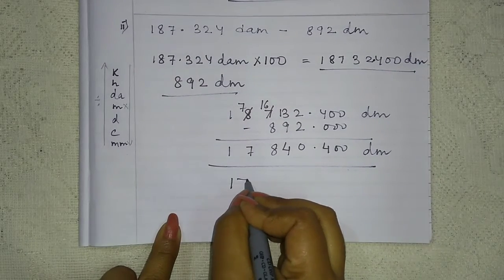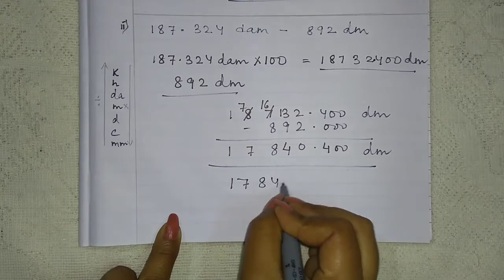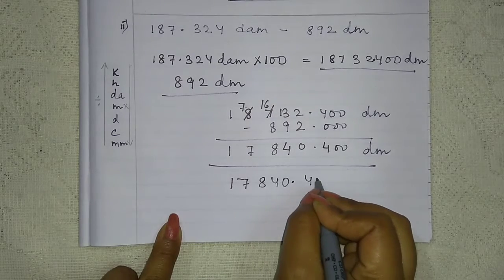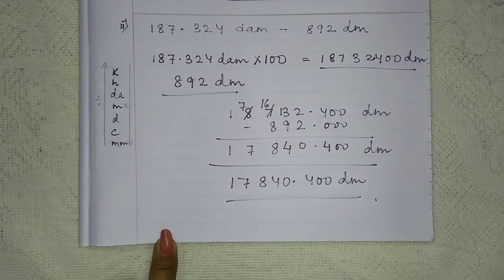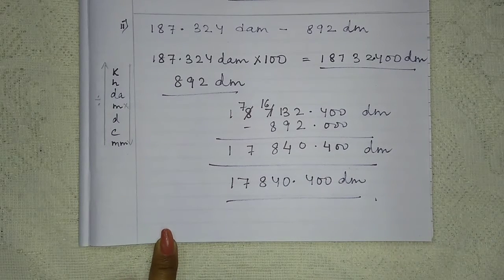Continue: 6 minus 8 minus 9 equals 7. So here we have got the answer: 17840.40 decimeter. Okay? I hope it's clear. Let us see one more question.